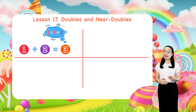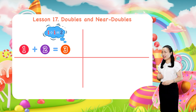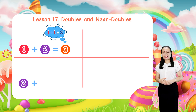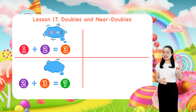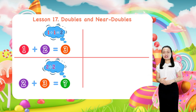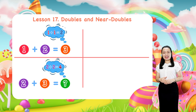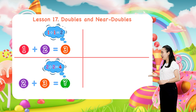If you have to add 2 plus 3, then think: 2 plus 2 equals 4, then add on 1 to get 5.